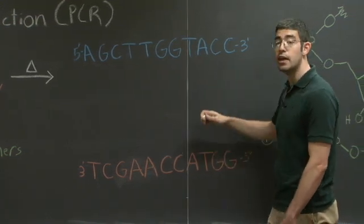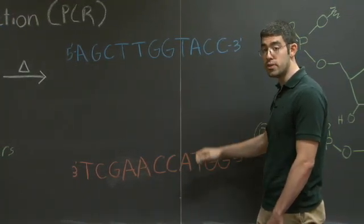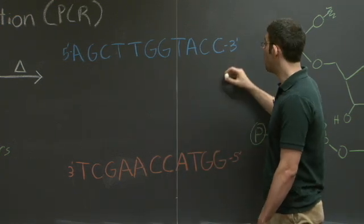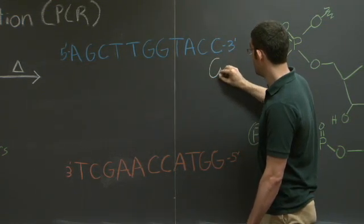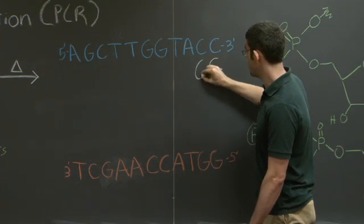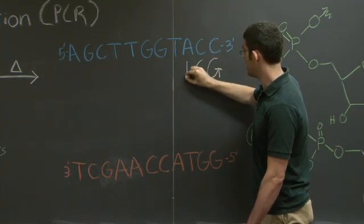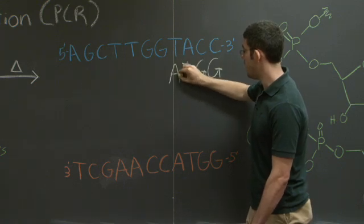So for example, if we were designing primers for these two sequences, one of them would be G, G, T, A.